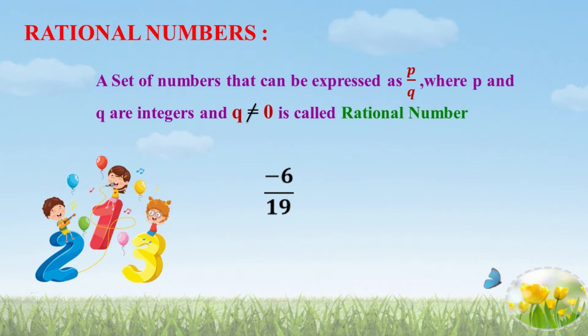Let us have another example: 7 by 0. Is it a Rational Number? No, because Q is not equal to 0 is the condition given. Q is the denominator. Here, the denominator takes the value 0. Therefore, this is not a Rational Number.